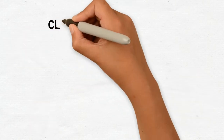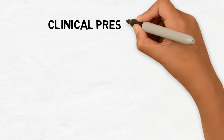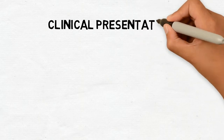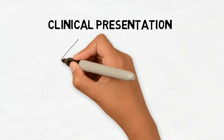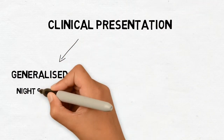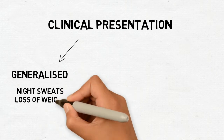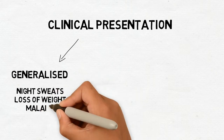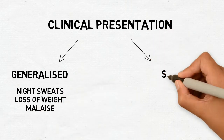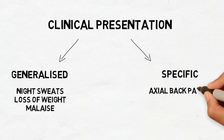Generalised symptoms include night sweats, loss of weight and malaise, amongst other constitutional symptoms. Specific signs and symptoms include axial back pain, acute back deformity and neurological deficits.